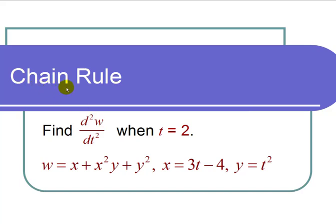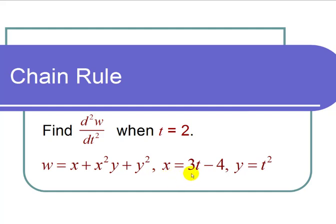This is a video on the chain rule. The question asks to find d squared w over dt squared when t equals 2. We have w equals x plus x squared y plus y squared, x equals 3t minus 4, and y equals t squared.